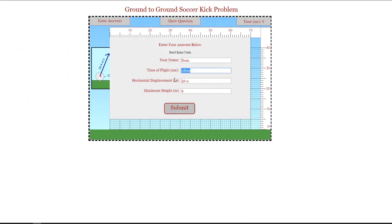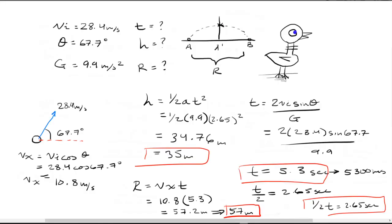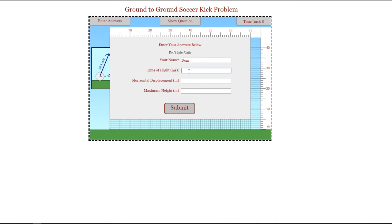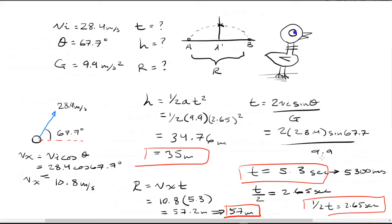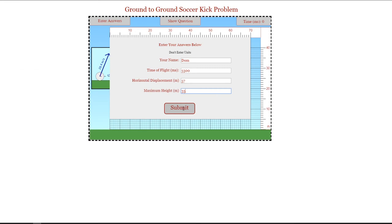So enter your name. These are answers from a previous problem that I was doing just for practice. So 5,300 is the time of flight. Horizontal displacement we said was 57, and then the maximum height was 35. Let me just double check my answers here. 35, 57, 5,300. Looks pretty good to me. So let's go ahead and submit.